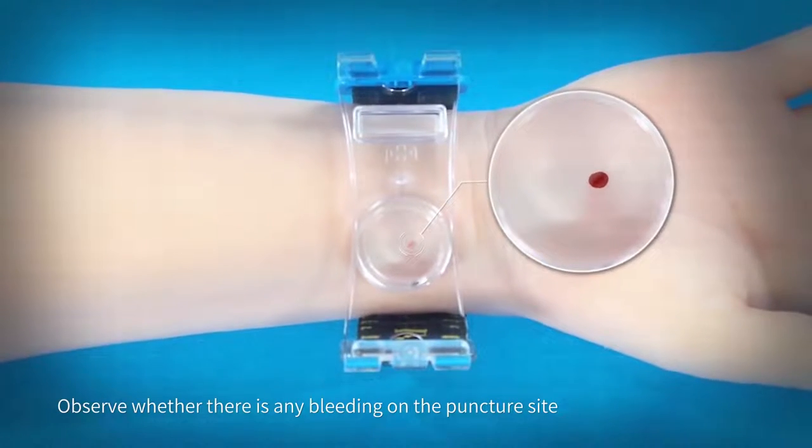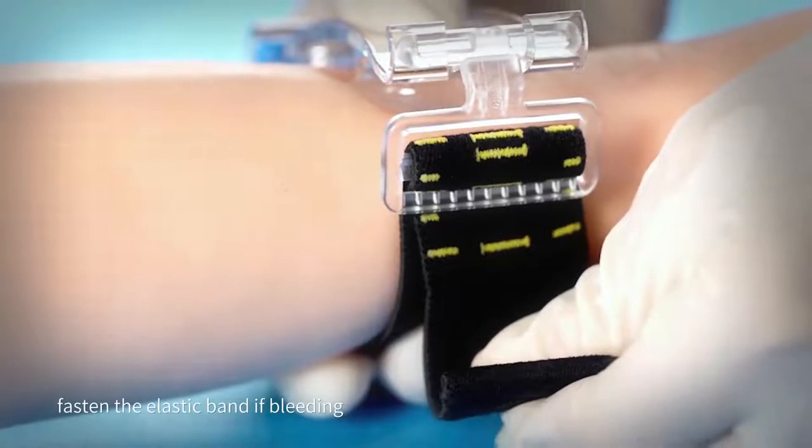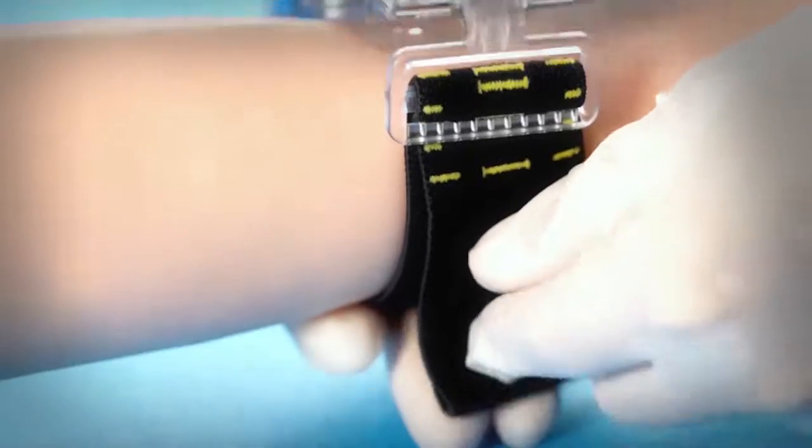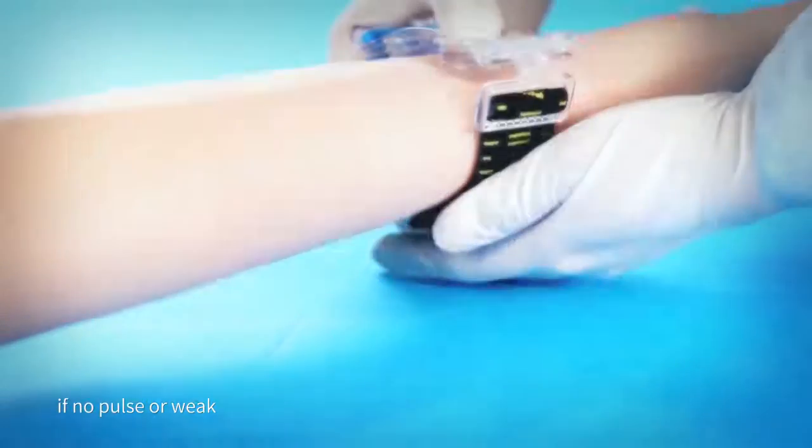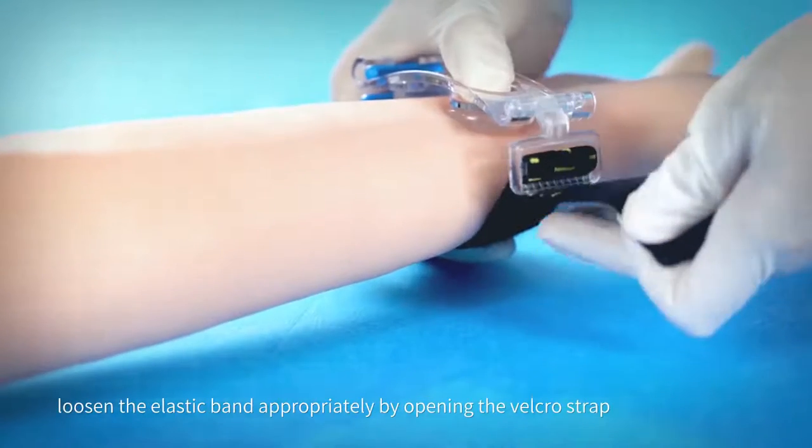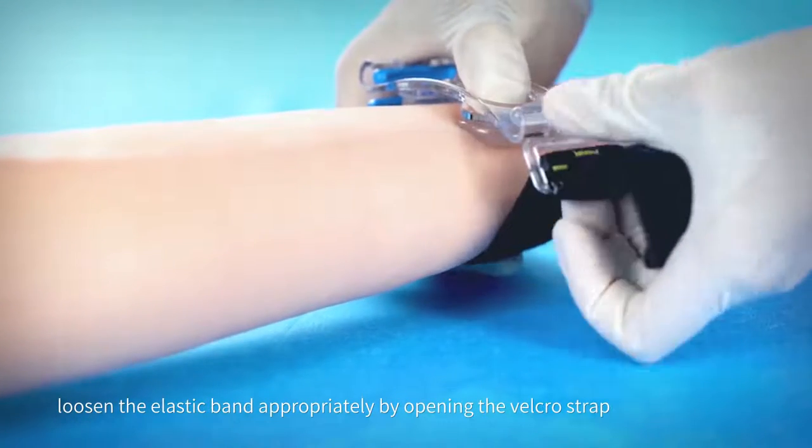Observe whether there is any bleeding on the puncture site. Fasten the elastic band if bleeding. Touch the distal radial artery to check the pulse. If no pulse or weak, loosen the elastic band appropriately by opening the Velcro strap.